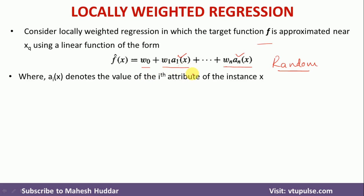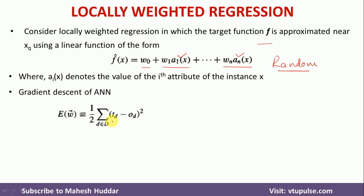To understand how to modify these weights, we consider the gradient descent rule of artificial neural networks. We calculate the error term with respect to the target output and the calculated output. The error term is half the squared difference between the target output and the calculated output over all training examples — the same way it is written in the gradient descent rule.